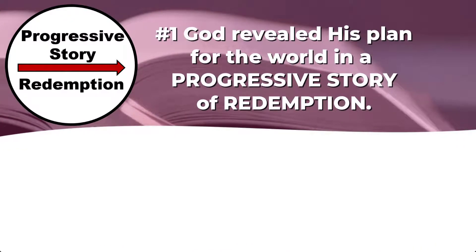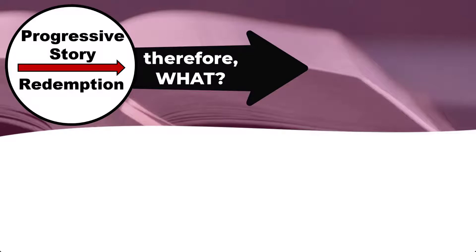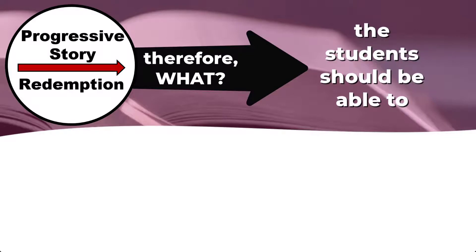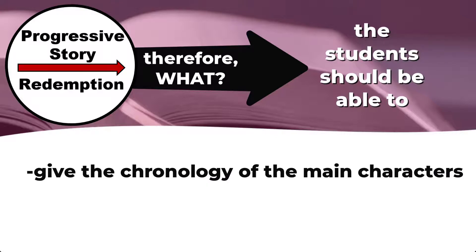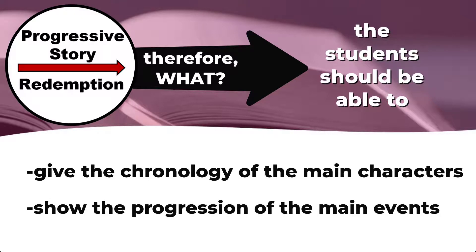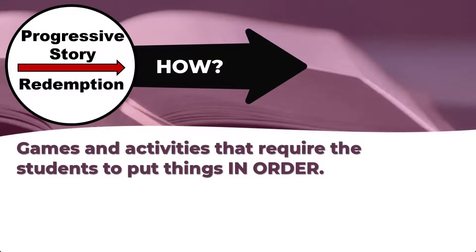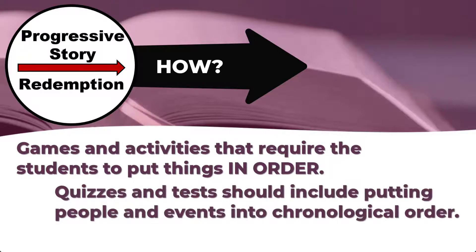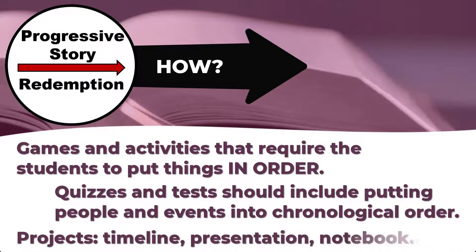Number one, God revealed His plan for the world in a progressive story of redemption. Therefore, when I assess what the students have learned and what they should understand, I am assessing that they can give me the chronology of the main characters and the progression of the main events. I would include activities or games that make the students put things in order. My quiz and test questions will include putting people and events into their chronological order, or I might assign a project where my student makes a timeline, creates a chronological presentation, or keeps a chronological notebook.